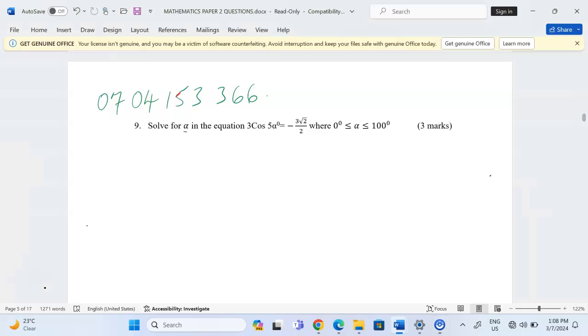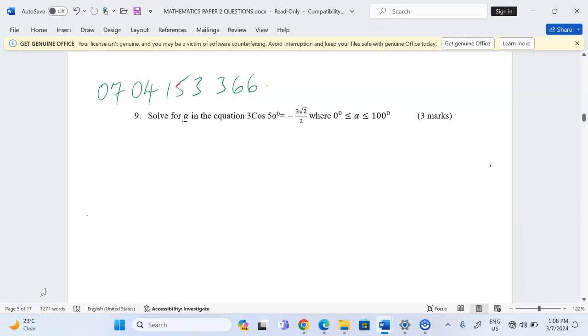solve for alpha in the equation 3 cos(5α°) = -3√2/2, where alpha is ranging between 0 and 100 degrees.